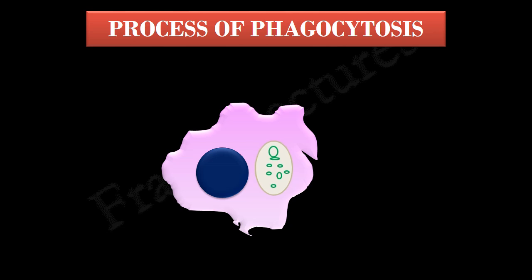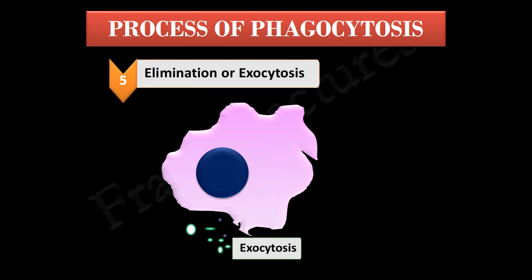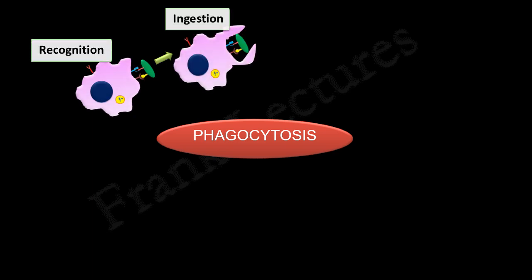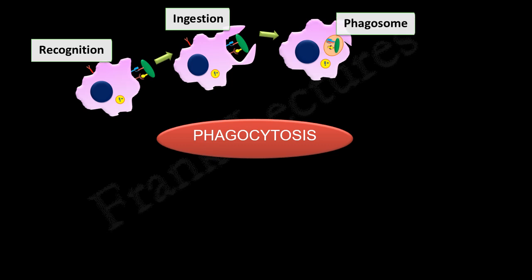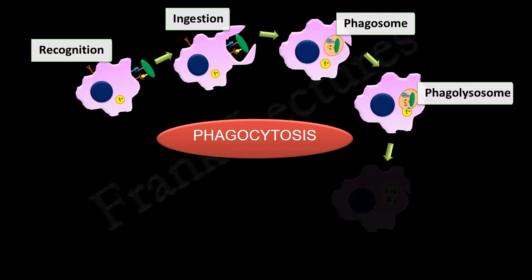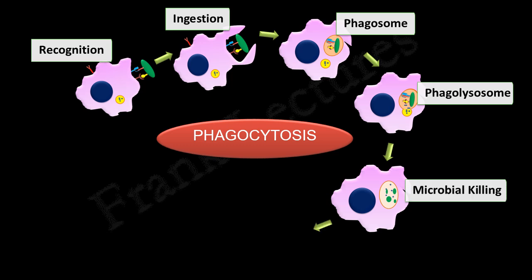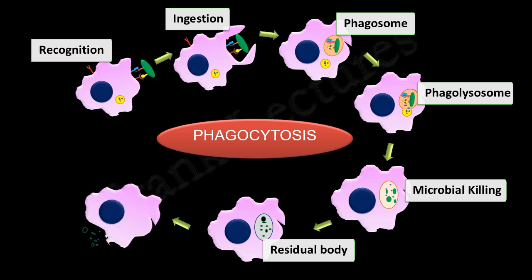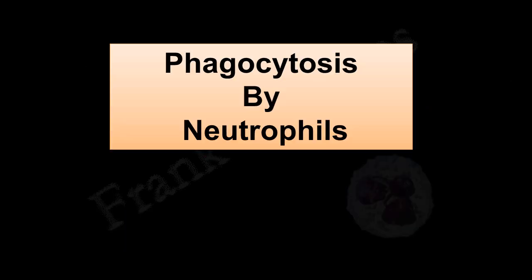This residual body then moves towards the cell boundary and discharges its contents outside the cell — a process known as exocytosis. To summarize the whole process of phagocytosis: it starts with recognition of the microbe, which results in internalization forming a phagosome. The phagosome fuses with a lysosome to produce a phagolysosome where microbial killing takes place, resulting in a residual body. Finally, the indigestible material is removed out of the cell by exocytosis.